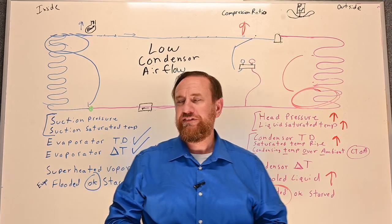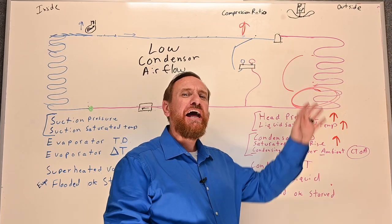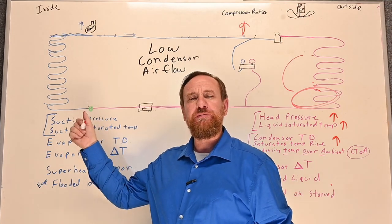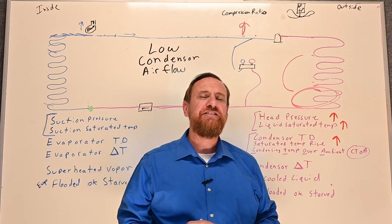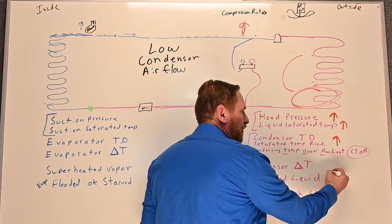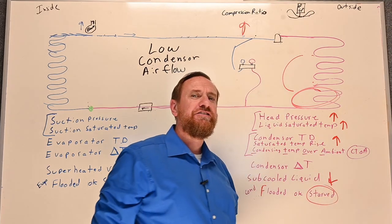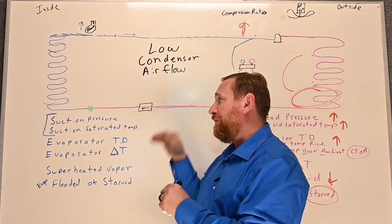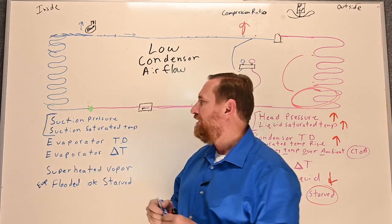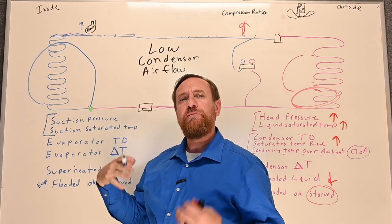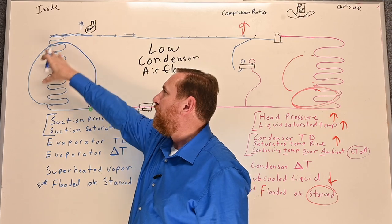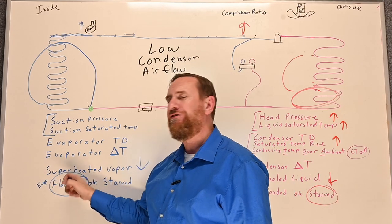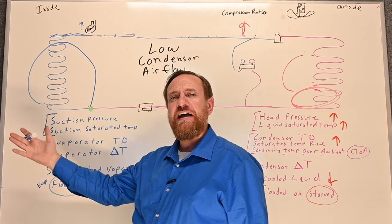With a fixed orifice, things change. We have higher pressure on the outside, which means there's more pressure pushing against the liquid through that same fixed orifice — we're pushing harder. We could actually see our sub-cooled liquid start to drop, which can give us a starved condenser as we push liquid out at a much faster rate. That liquid is being pushed through the metering device at a faster rate, so we end up with more liquid in our evaporator coil, which means less superheated vapor. Our superheat starts to drop and we end up flooding the evaporator coil — too much refrigerant in there.